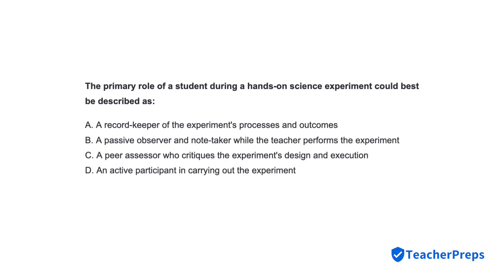The primary role of a student during a hands-on science experiment could best be described as? Correct response is letter D: Active participant in carrying out the experiment.